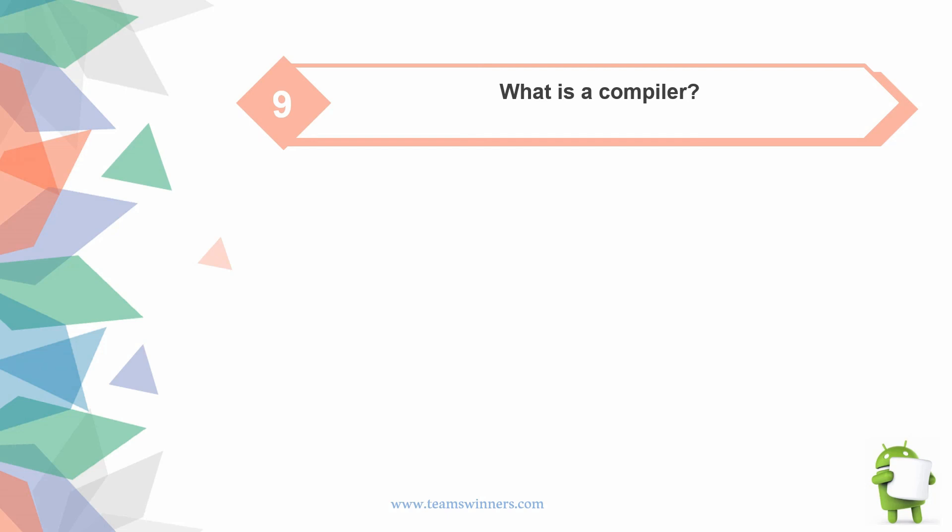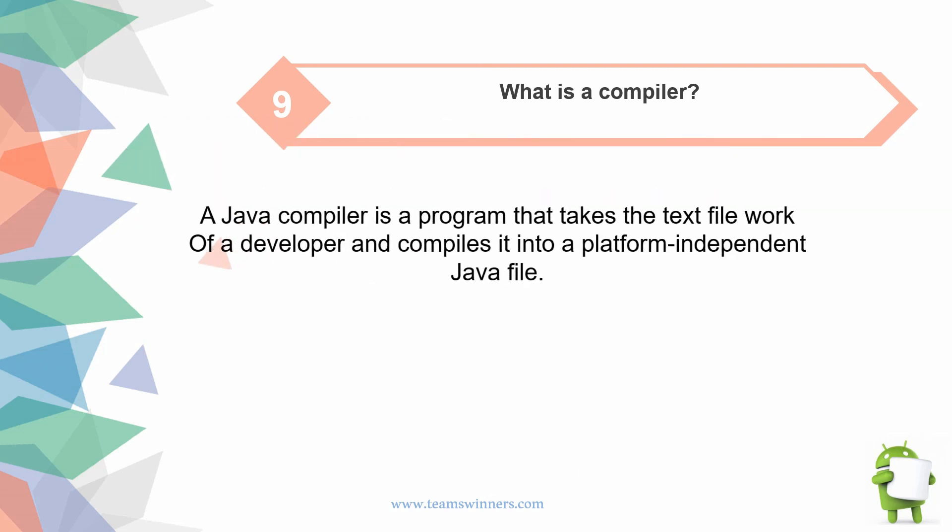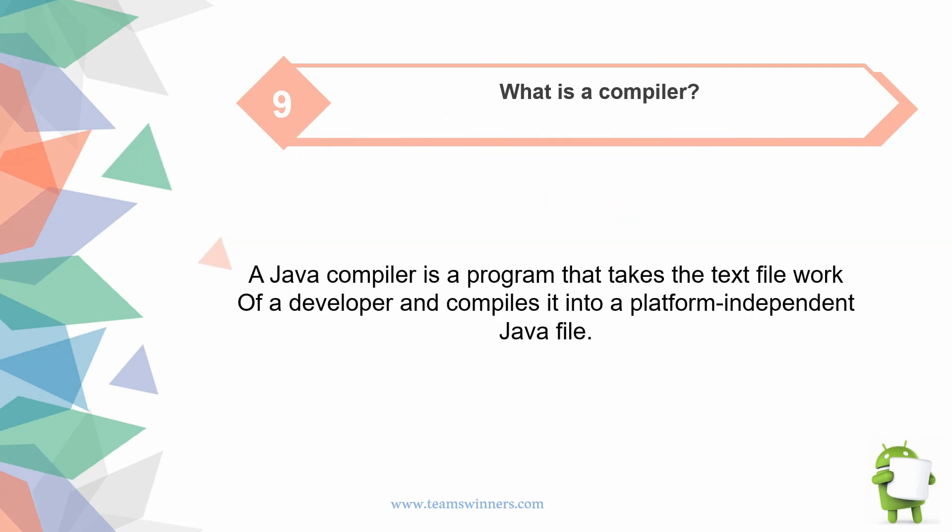What is a compiler? A Java compiler is a program that takes the text file work of a developer and compiles it into a platform-independent Java bytecode file.